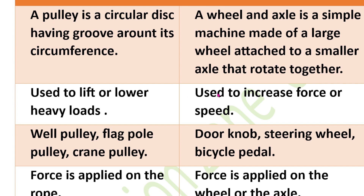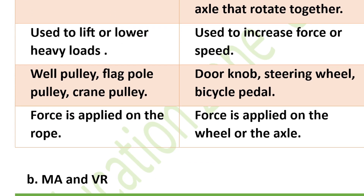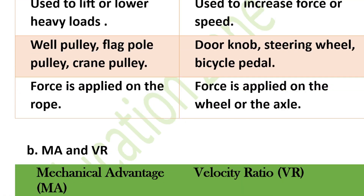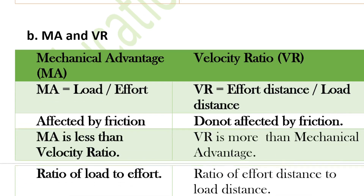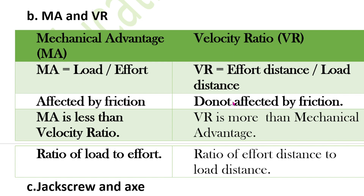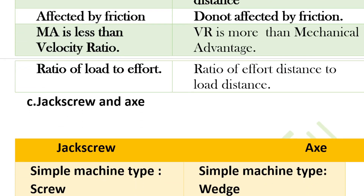The difference between mechanical advantage and velocity ratio: mechanical advantage formula is load upon effort, velocity ratio is effort distance upon load distance. Mechanical advantage is affected by friction, but velocity ratio is not affected by friction. Mechanical advantage is less than velocity ratio. Mechanical advantage is the ratio of load to effort; velocity ratio is the ratio of effort distance to load distance.